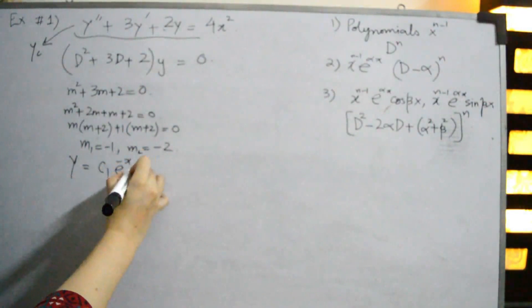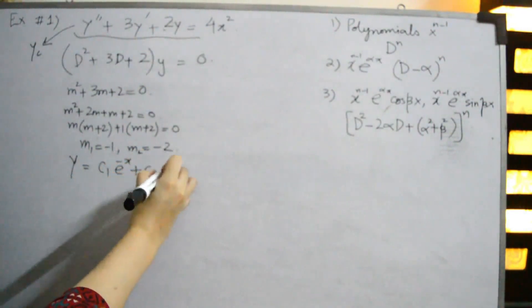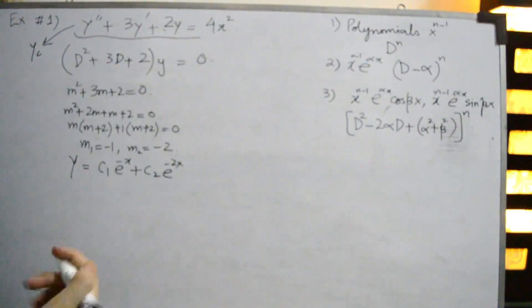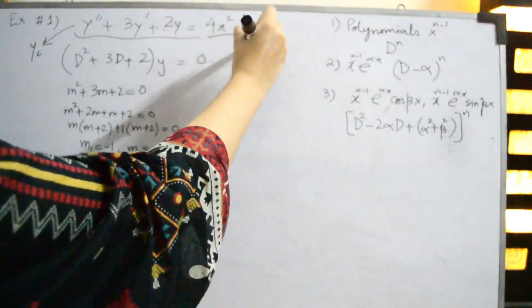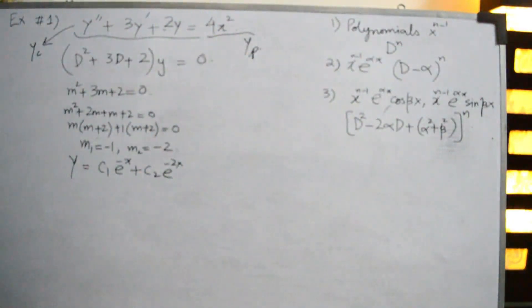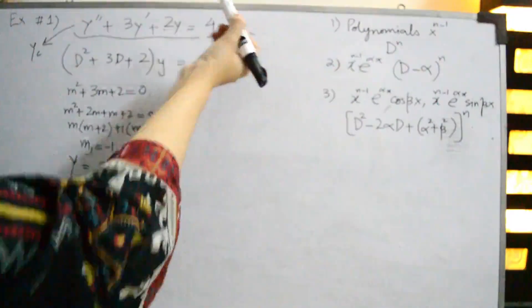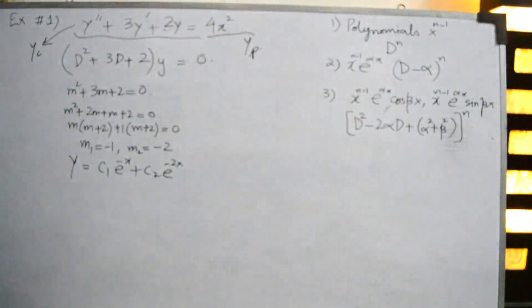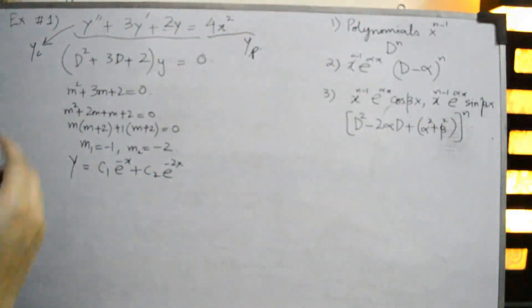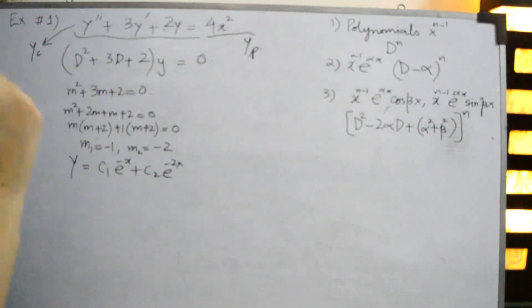Now we find yp. For the non-homogeneous part, 4x² is a polynomial of second order. The annihilator operator must be of one order greater, so the annihilator operator for 4x² is d cubed (d³), since d³ applied to 4x² equals zero.